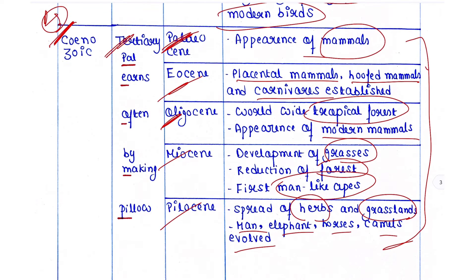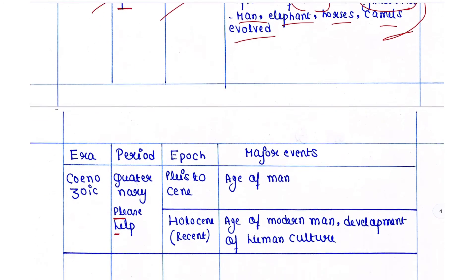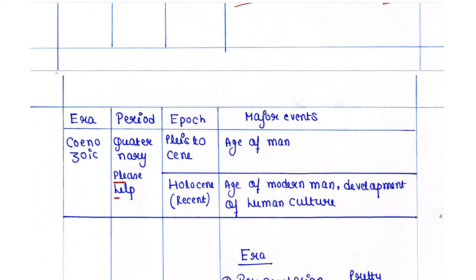To remember the five Tertiary epochs, use the sentence: 'Pal earns often by making pillow.' From 'Pal' — Paleocene; from 'earns' — Eocene; from 'often' — Oligocene; from 'making' — Miocene; from 'pillow' — Pliocene. This is very easy to remember.